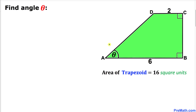Welcome to pre-math. In this video lesson we have a trapezoid as shown in the diagram such that its two side lengths are 6 and 2 respectively, and moreover the area of this trapezoid is 16 square units. Now we are going to calculate this angle theta.